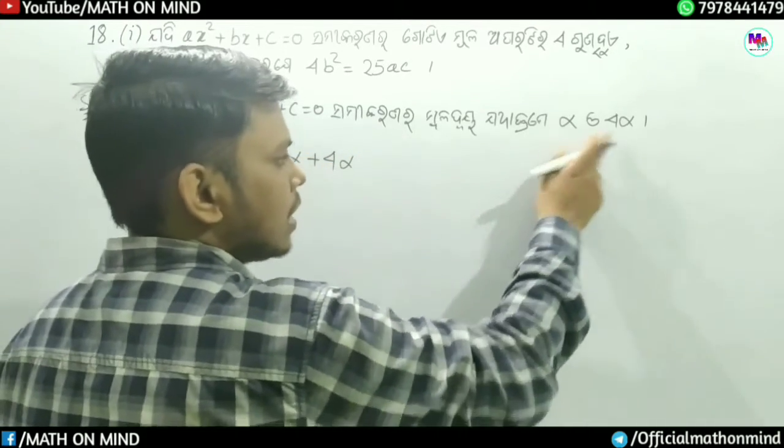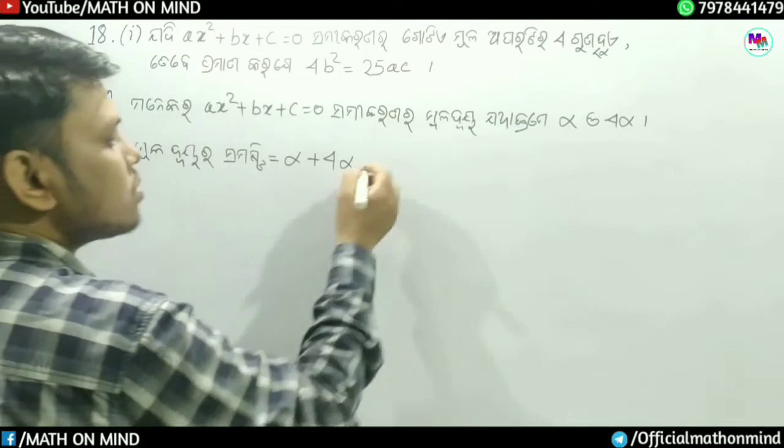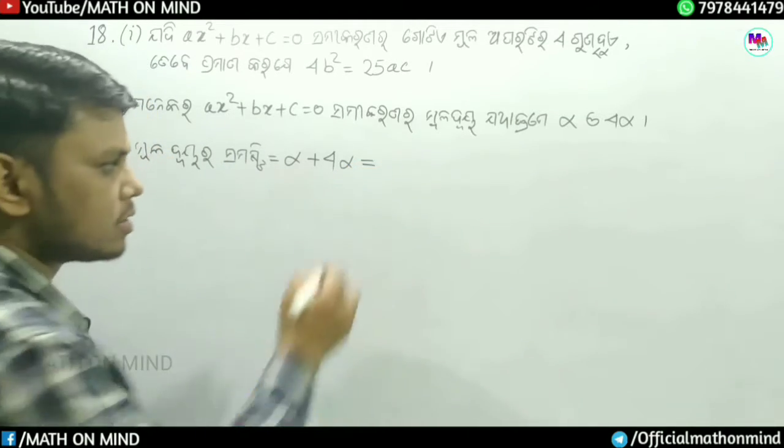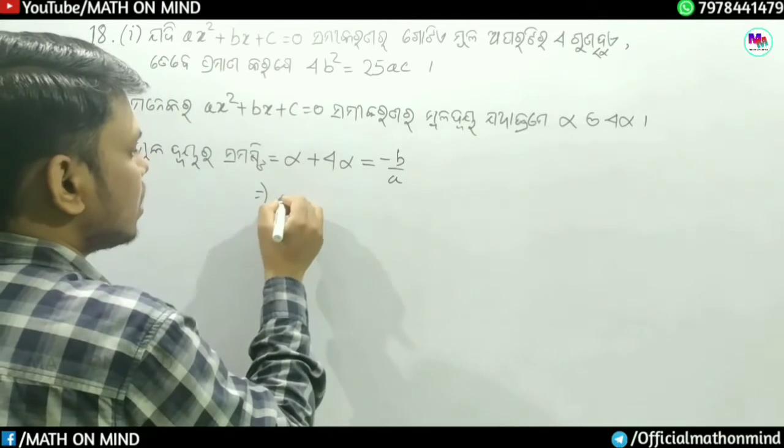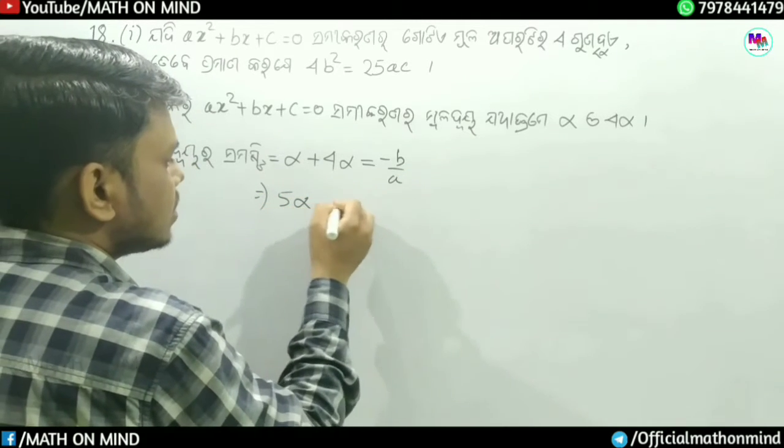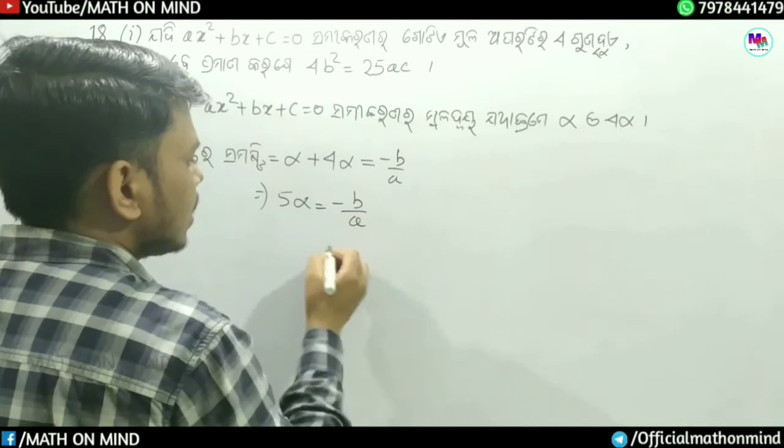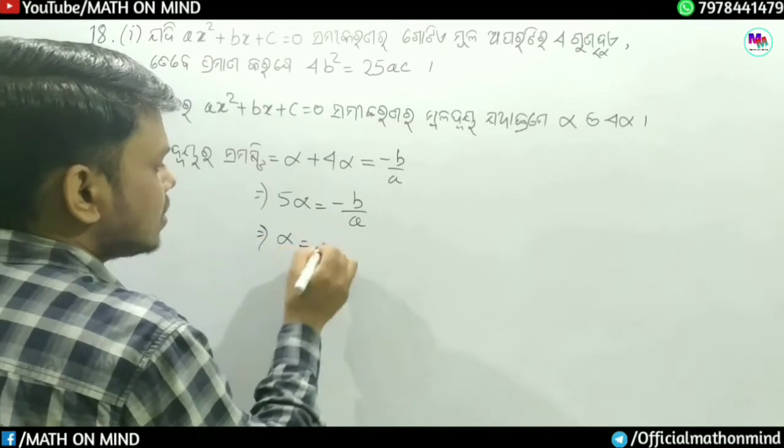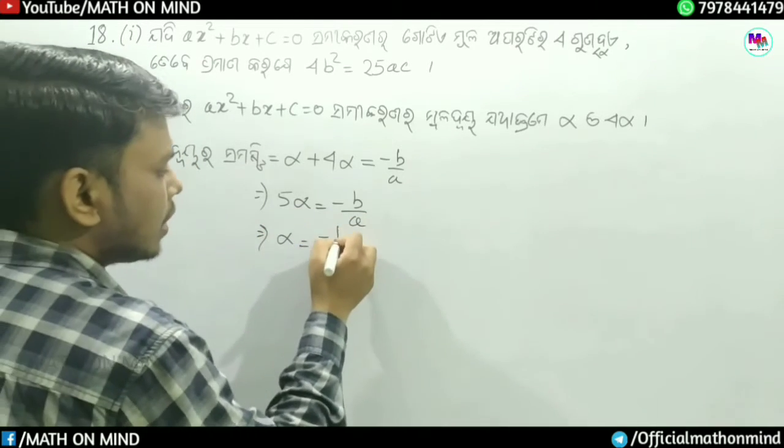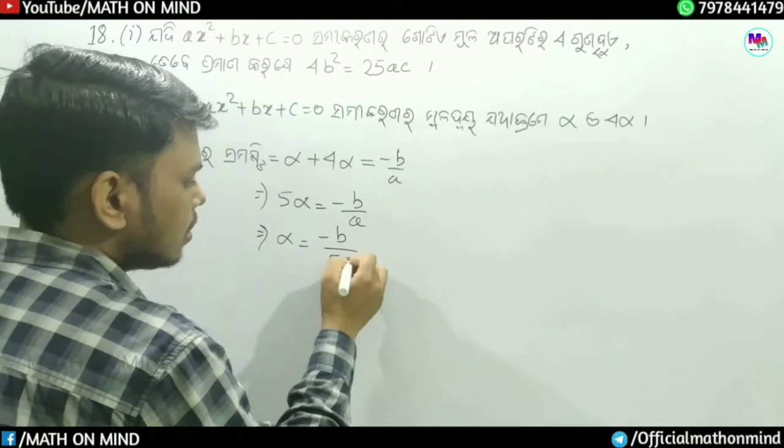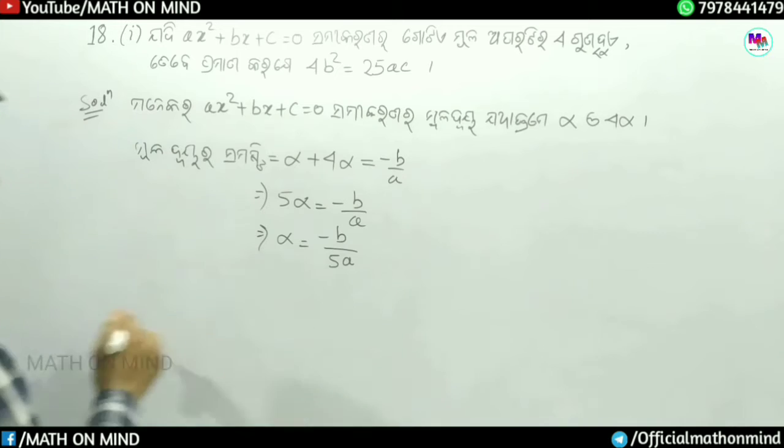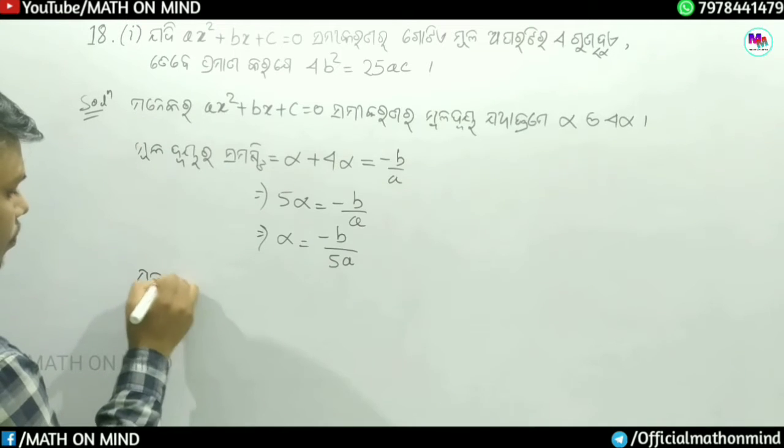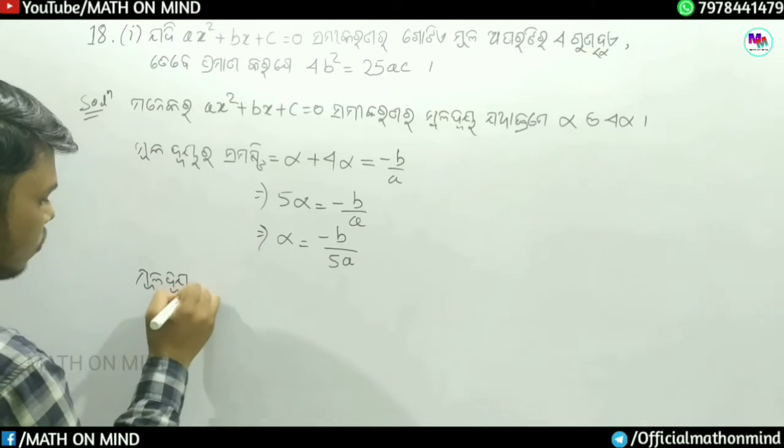Alpha plus 4 alpha, which is 5 alpha, is equal to minus b by a. Therefore alpha is equal to minus b divided by 5a.